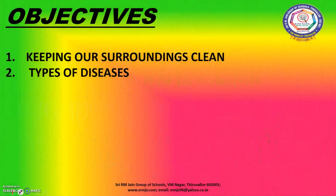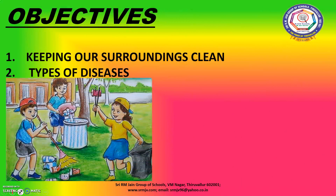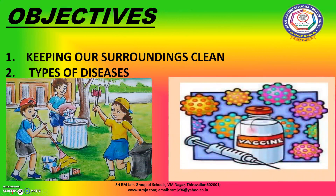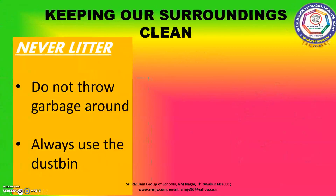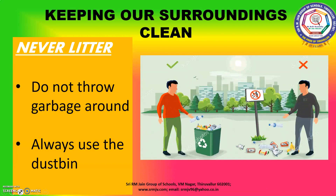Come on children, at the end of this session we will know more about these objectives: keeping our surroundings clean and types of diseases. Now we are going to learn about keeping our surroundings clean. We must follow some steps and some changes in our lifestyle to maintain a clean, green and disease-free environment. Never litter.